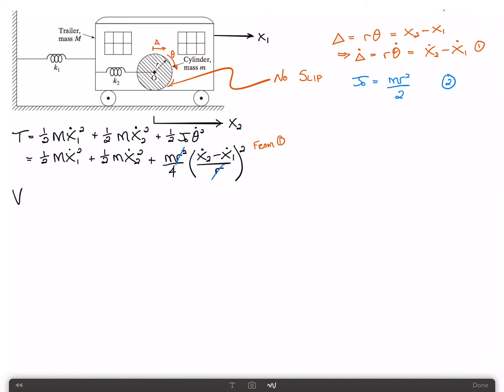All right, and now for the potential energy. We'll call that V. That's equal to one-half times spring 1, k1, x1 squared, plus one-half k2 times the deflection of spring k2, which based on our coordinate system is x2 minus x1 quantity squared. We'll label these three and four respectively.